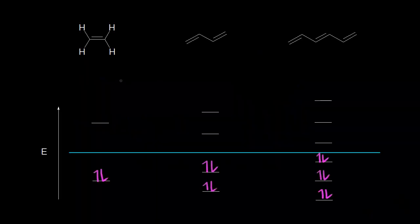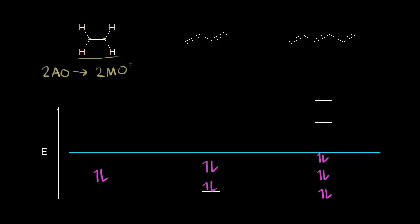Most organic molecules don't have any color at all. An example of that would be ethene or ethylene. Ethene has two carbons, and each of those carbons is sp2 hybridized, so each has a p orbital. We have a total of two p orbitals, or two atomic orbitals, and those two atomic orbitals are going to recombine to form two molecular orbitals: one bonding molecular orbital and one antibonding molecular orbital. The bonding molecular orbital has a lower energy, and the antibonding molecular orbital is higher in energy.